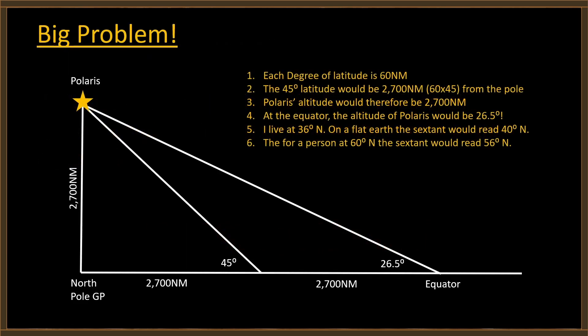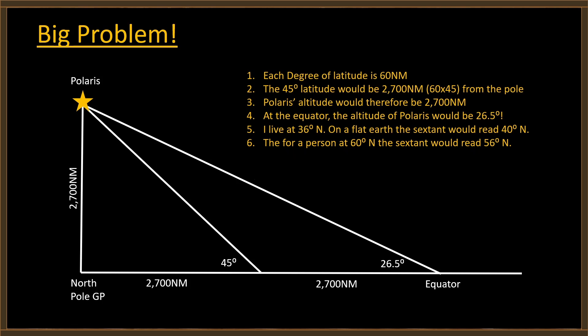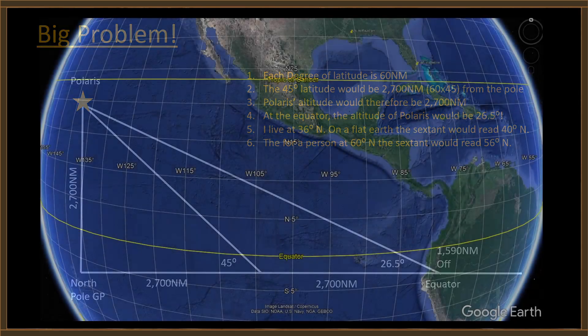Let's look at Polaris over the north pole — that's the GP. At 45 degrees, we'd be 2,700 nautical miles south of Polaris: that's 60 nautical miles per degree times 45 degrees. Because that is an isosceles right triangle, the altitude of Polaris is also 2,700 nautical miles. Now going to the equator using 2,700 nautical miles as the altitude for Polaris, we find the angle to Polaris measured from the equator is 26.5 degrees.